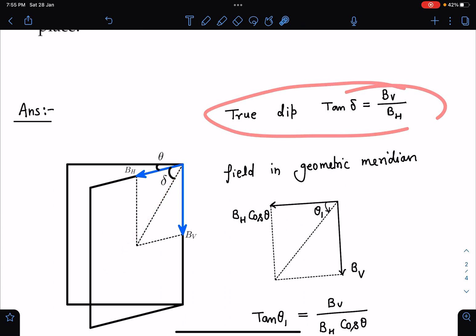Now they are placing the dip circle in the plane of the geometric meridian, so the magnetic needle will align itself in the direction of net field. Clearly you can see the vertical component of magnetic field will be as it is, whereas this horizontal component of magnetic field will become Bₕ cos θ.